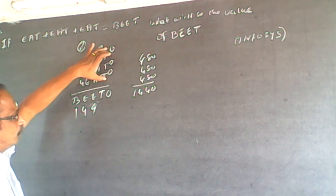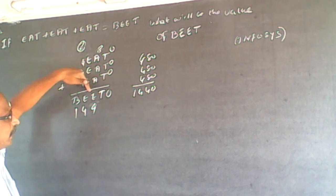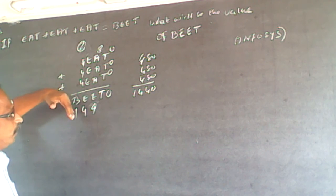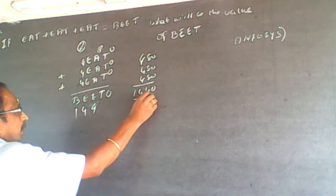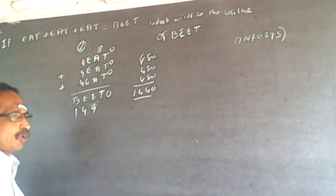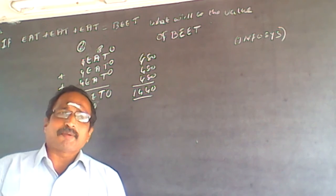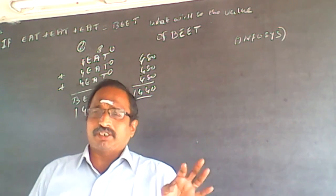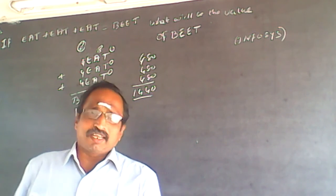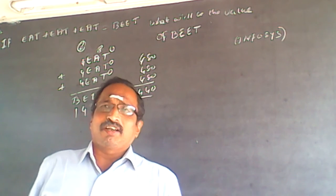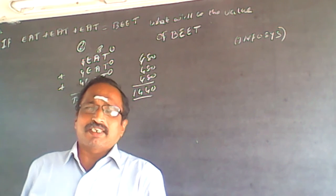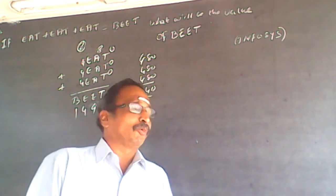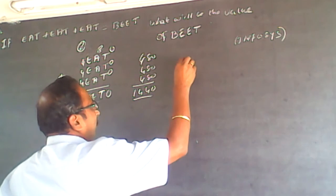Now checking if E=0: 3×8=24, carry 2; 3×4+2=14, carry 1 — this works. But also confirming why T must be 0 or 5: 3×1=3, 3×2=6, 3×3=9, 3×4=12, 3×5=15 (ends in 5), 3×6=18, 3×7=21, 3×8=24. Only 0 and 5 give the same last digit. Now I will try T=5.